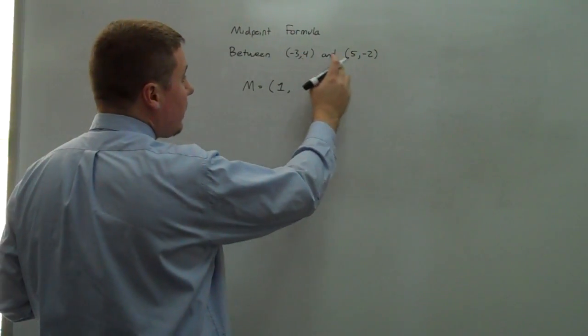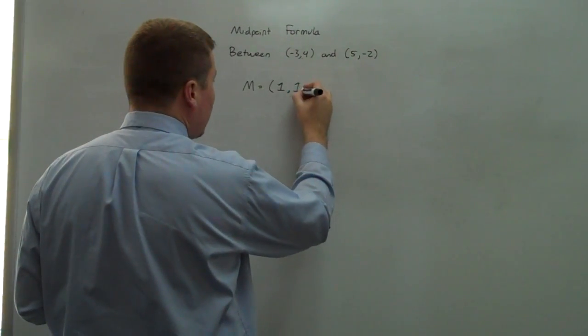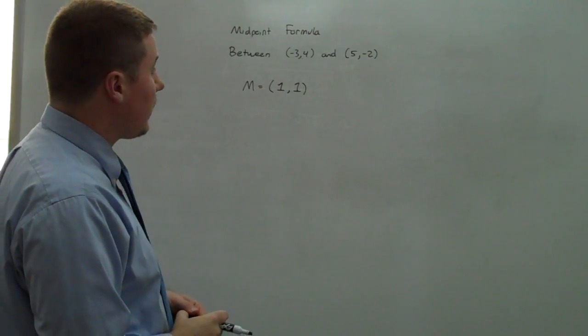Then 4 plus negative 2 is, again, 2. 2 divided by 2 is 1. So the midpoint between these two points is (1,1).